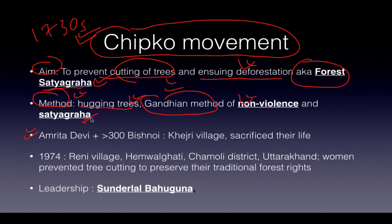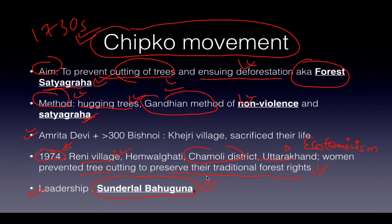The Chipko Movement started again in March 1974 in Raini village in Chamoli district of Uttarakhand in Hemwal Ghati, where women prevented tree cutting to preserve their traditional forest rights. It is also called eco-feminism, where women came and defied the loggers, saying they would not be able to cut the trees because they had traditional rights over them. The leadership is of Sundarlal Bahuguna, who propagated it throughout India.